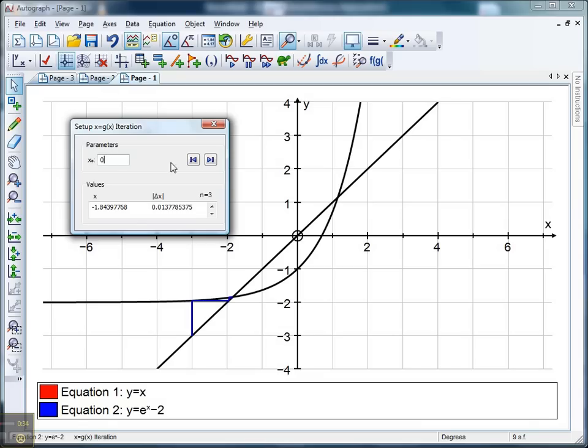If I do x equals 0. Let's have a look. Okay, I'm still staircasing, converging in on this one. How about if I go really close like x equals 1? No, still staircase.